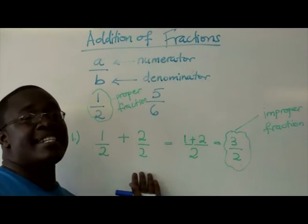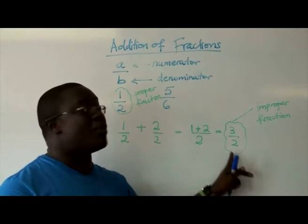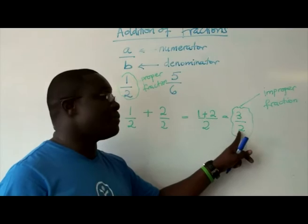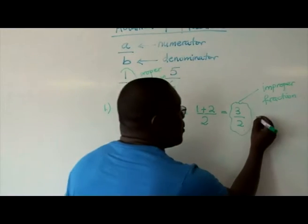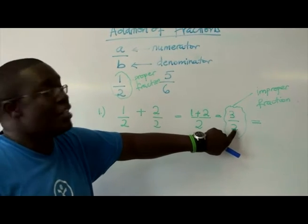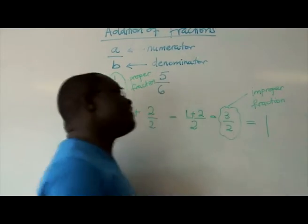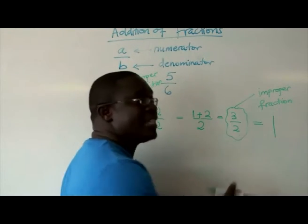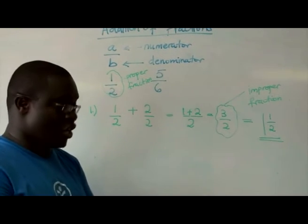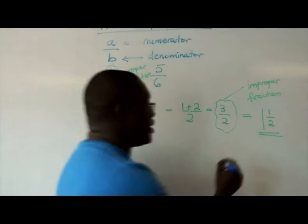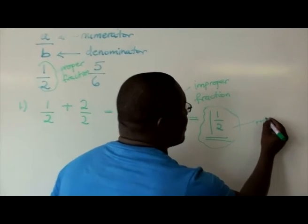The question might say, leave your answer as a mixed fraction. That means that whenever you have an improper fraction, when the numerator is bigger than the denominator, then you have to write it as a mixed fraction. How many times can 2 go into 3? It's only once. If it goes in once, what is the remainder? It's 3 minus 2, which is 1. So it will be 1 out of 2. If it's in this form, we call it a mixed fraction.